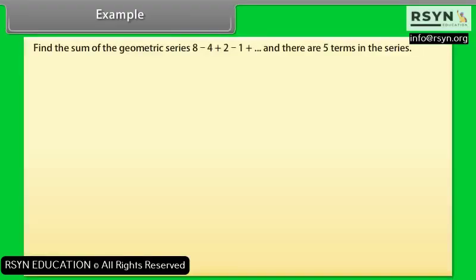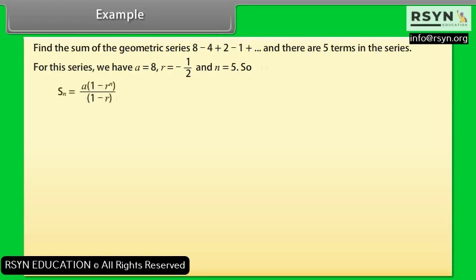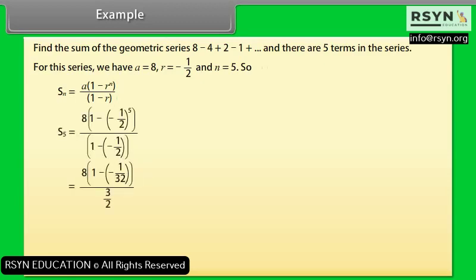Example: Find the sum of the geometric series 8 − 4 + 2 − 1 + ... with 5 terms. For this series, A = 8, R = −1/2, and n = 5. So Sₙ = A × (1 − Rⁿ) / (1 − R). By substitution and calculation, we get 11/2.